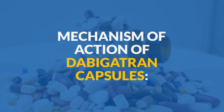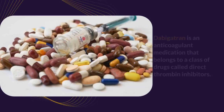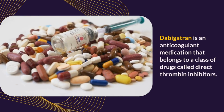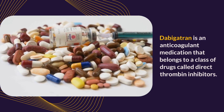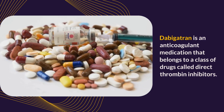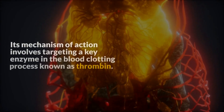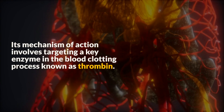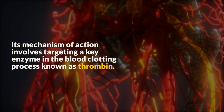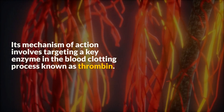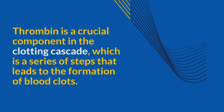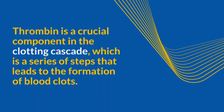Mechanism of action of dabigatran capsules. Dabigatran is an anticoagulant medication that belongs to a class of drugs called direct thrombin inhibitors. Its mechanism of action involves targeting a key enzyme in the blood clotting process known as thrombin. Thrombin is a crucial component in the clotting cascade, which is a series of steps that leads to the formation of blood clots.